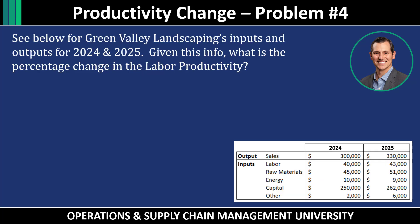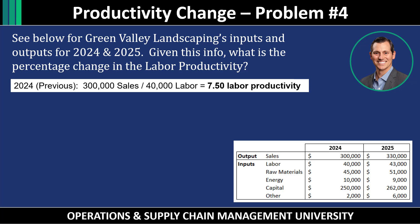Our last problem: see below for Green Valley Landscaping's inputs and outputs for 2024 and 2025. What was the percentage change in labor productivity? I wanted to include this question because more information is given than you need. The inputs listed are labor, raw materials, energy, capital, and other — but the question only asks for the change in labor productivity, so this is a single-factor productivity calculation.